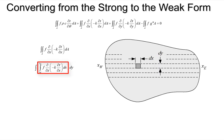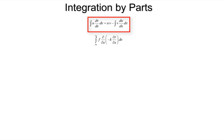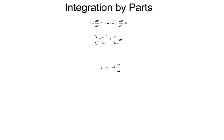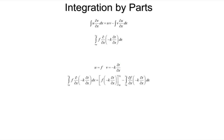Let's take the inner integral — the one in x — and apply integration by parts to it. Integration by parts is basically an application of the chain rule inside the derivative. We make the substitution that u equals the weighting function f, and v equals the function inside the derivative: minus k dT/dx. With that substitution, the result has a first term equal to f multiplied by minus k dT/dx, evaluated at the eastern edge of the strip at x-east, minus the value at the western edge at x-west.